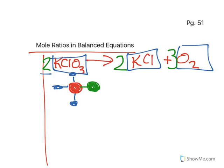Now this two coefficient in front means that I've got two of those molecules. So I'm going to draw a second one of those to represent my second KClO3.